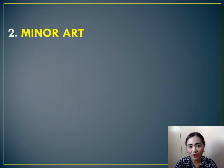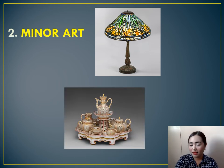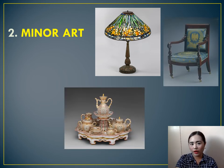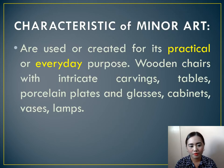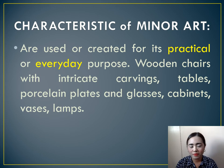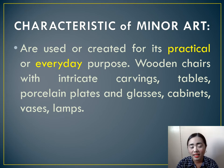The second variety of art is minor art. Examples of minor art pieces include a lampshade, a tea set, and a chair. Minor art pieces are used or created for their practical or everyday purpose — examples include wooden chairs with intricate carvings, tables, porcelain plates and glasses, cabinets, vases, and lamps.